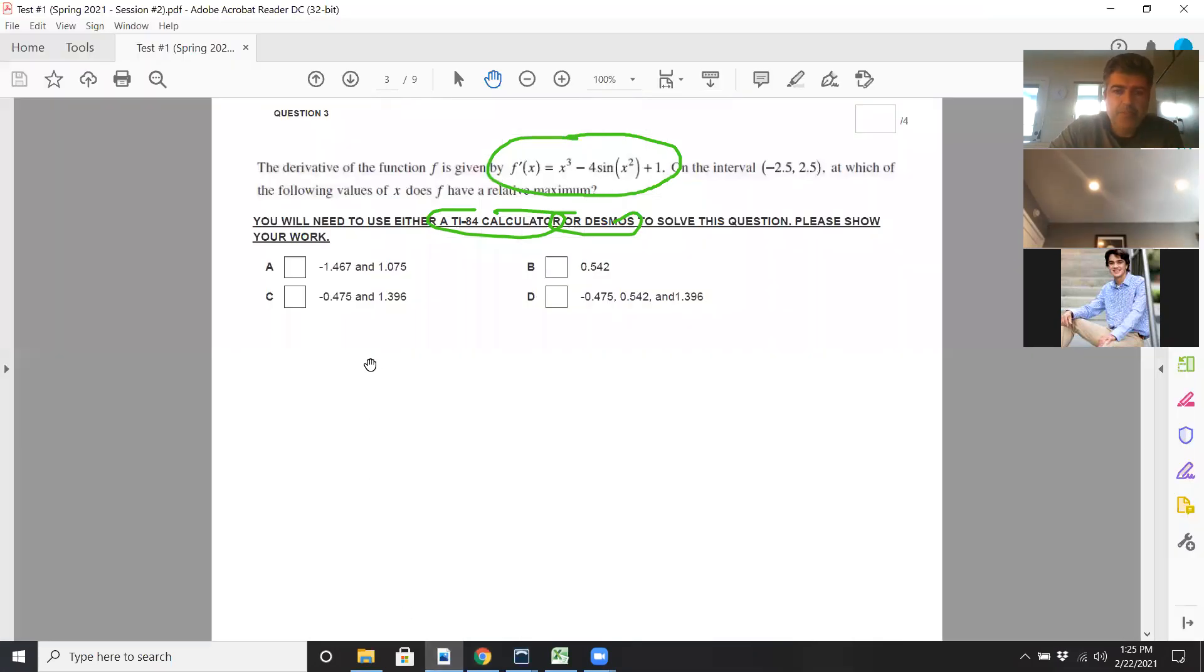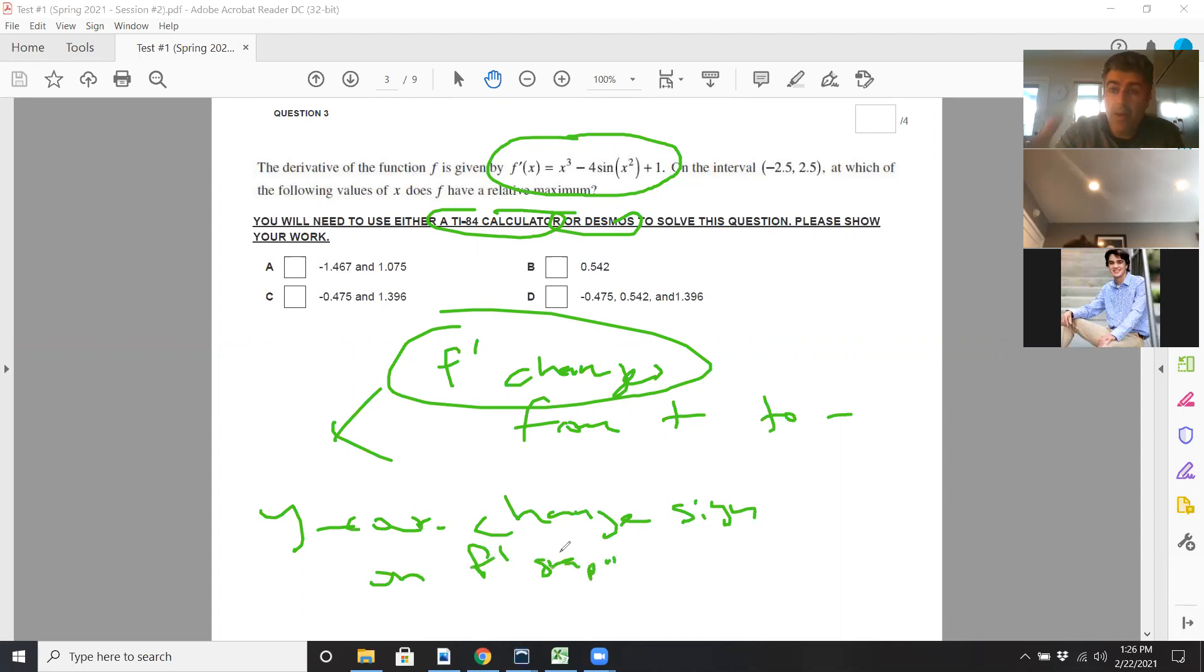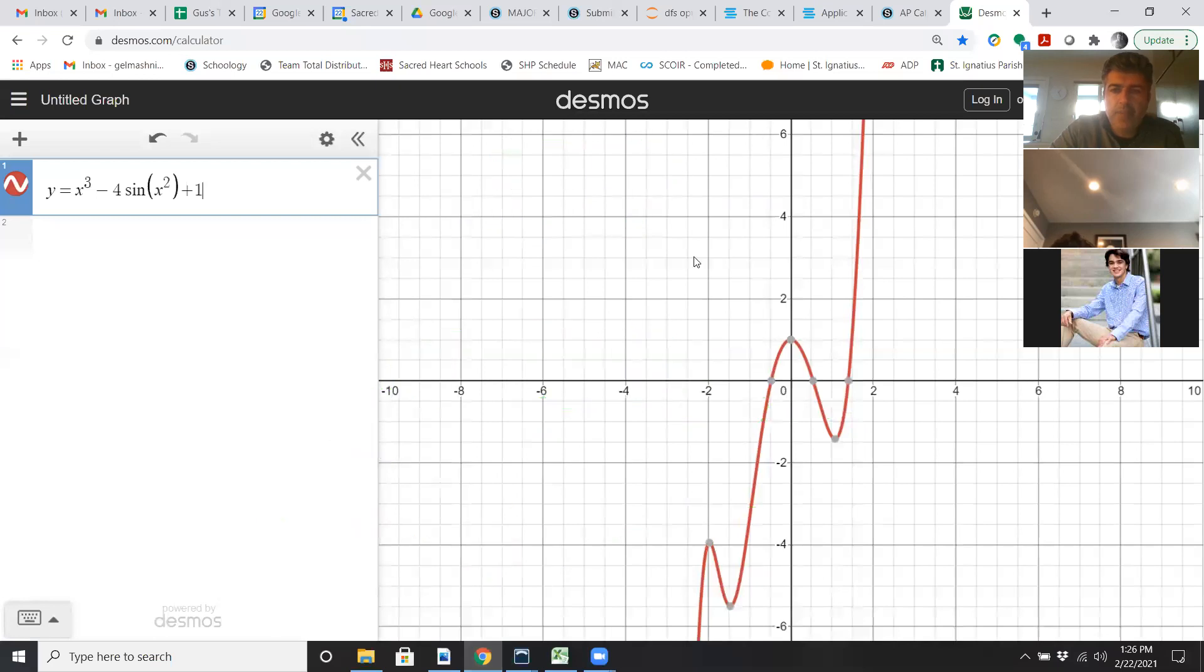So you're being asked to find a relative maximum. Relative maximums happen when f prime changes from positive to negative, or when the y coordinates change sign on that f prime graph. Because remember, the y coordinates on that f prime graph are f prime. And that's what happens for a relative maximum. So going back to Desmos. Clearly, the y coordinates here are positive. Here, the y coordinates are negative. This is an f prime graph. So the only change where we see from positive to negative for the y coordinates on that f prime graph happens at that x coordinate that I just circled in green.